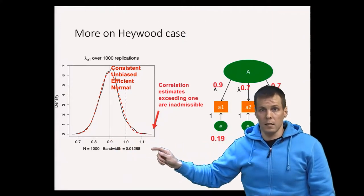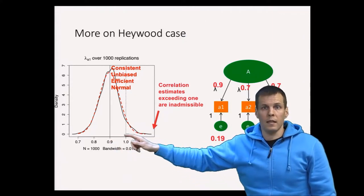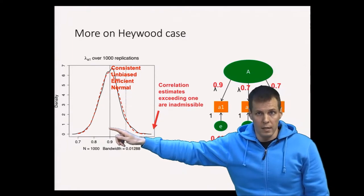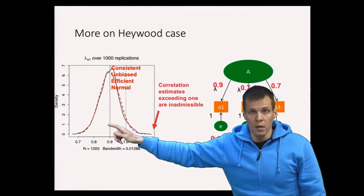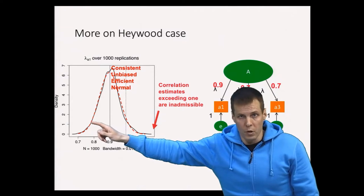If our sample size is small then it means that any individual estimate is not exactly at 0.9 but it is somewhere around 0.9 here.